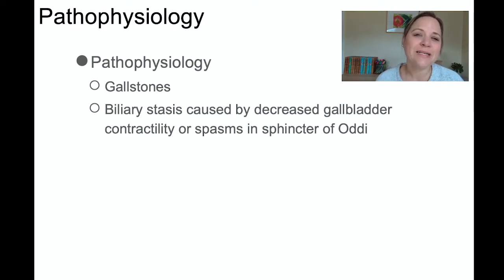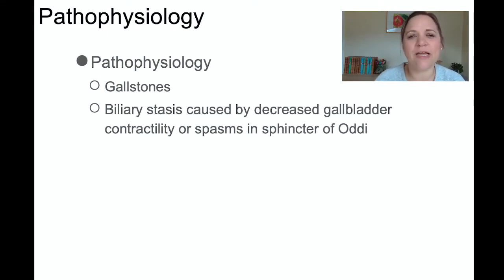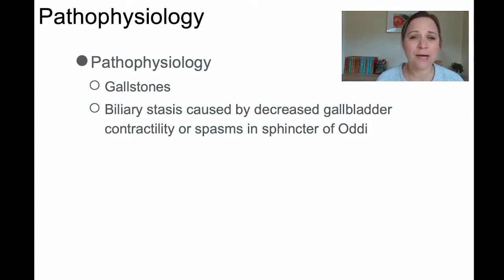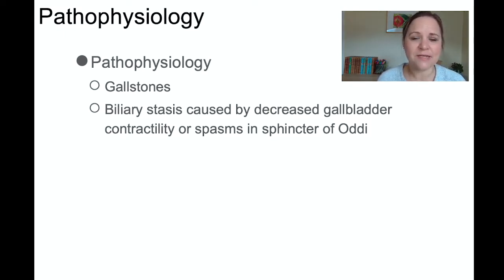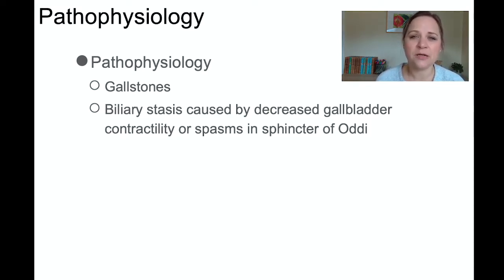So what is the gallbladder? The gallbladder is a small pear-shaped organ in our right upper quadrant that stores bile. Bile is infused into the lower GI tract after we eat a high-fat meal — it helps to digest fats. The bile is made in the liver, stored in the gallbladder, and then pushed out into the GI tract when we need it.